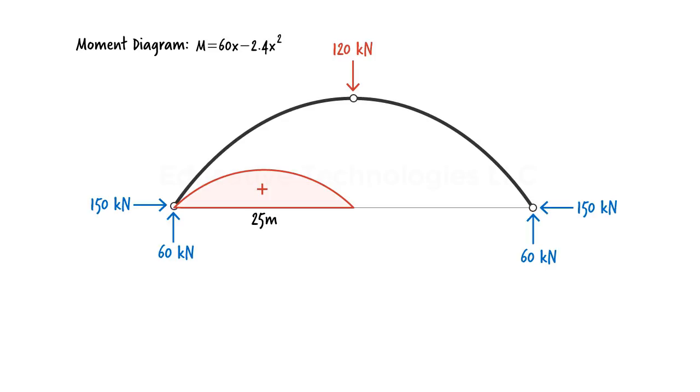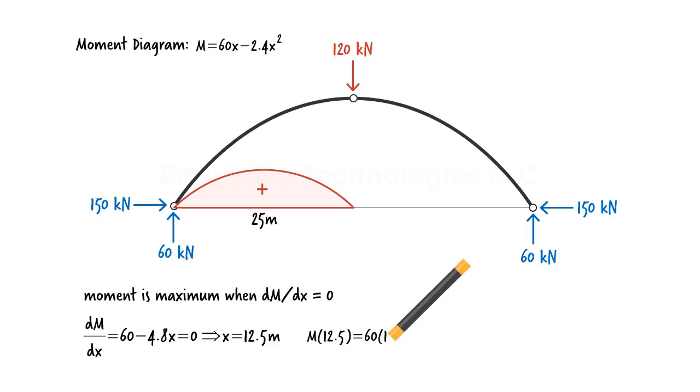Note that bending moment at the hinge at either end of the segment is 0. We can verify this by evaluating the equation at 0 and 25. We can determine the point of maximum moment by setting dm/dx to 0, like this. The equation tells us that moment is maximum at x equals 12.5. Hence, the magnitude of maximum moment equals 375 kNm.